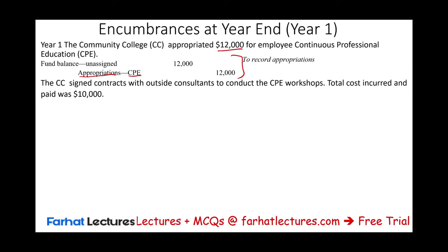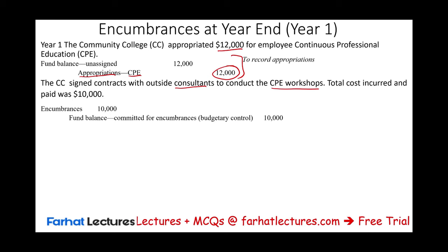The community college signed a contract with an outside consultant to conduct the CPE workshop. They contacted an educational company and asked them to provide $10,000 worth of continuous professional education. Are we within budget? Of course — we appropriated $12,000. We signed the contract but haven't incurred the cost yet. Once we sign the contract, we have to encumber this amount. Encumbering reduces our appropriation, bringing it down to $2,000 remaining.